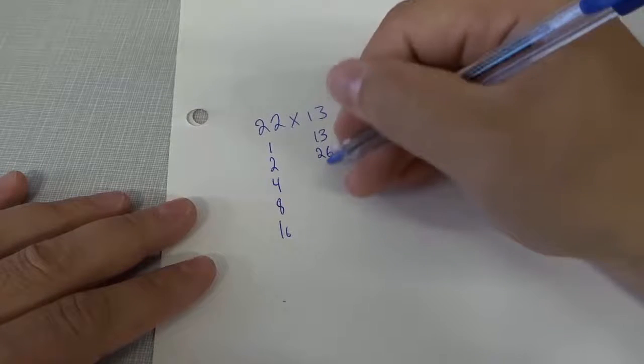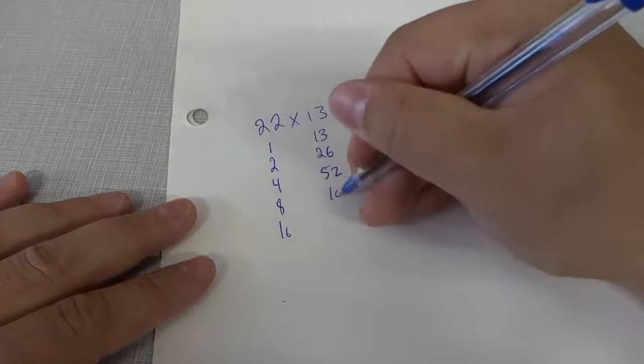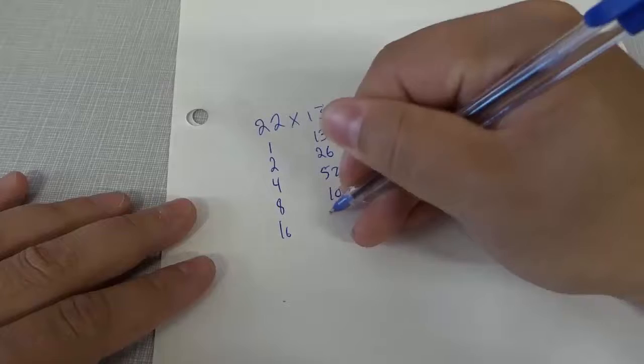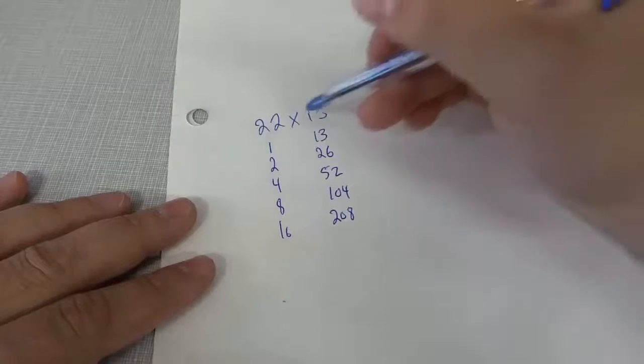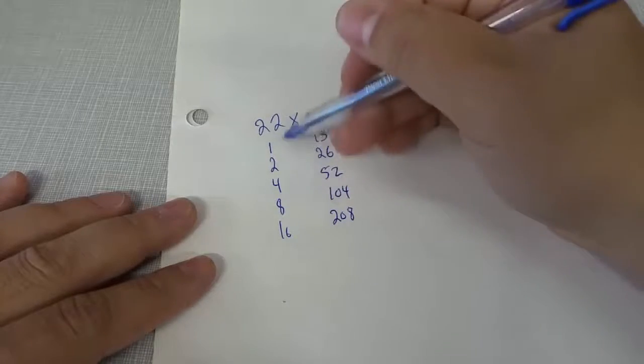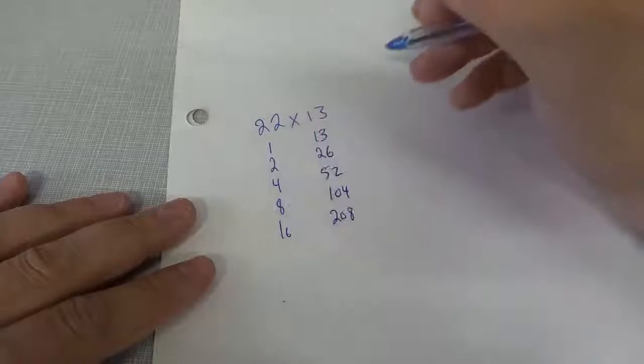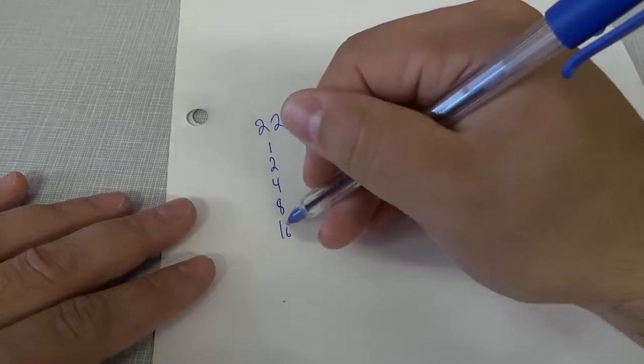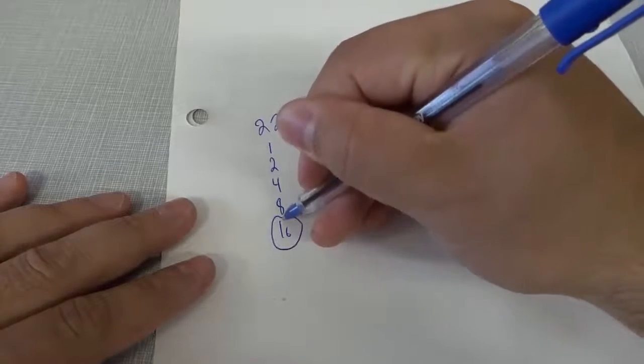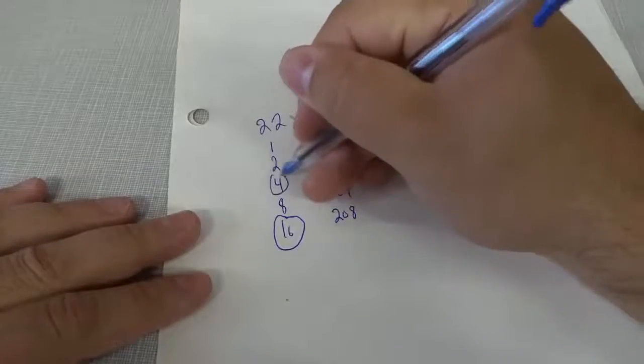13, 26, 52, 104, 208. So now what we're going to do is we're going to figure out the easiest way to add up to 22.